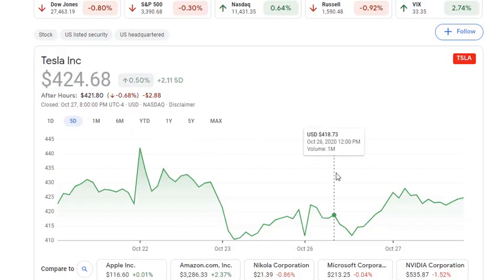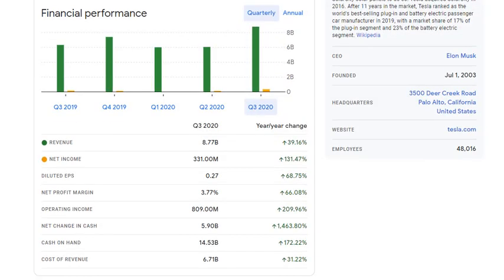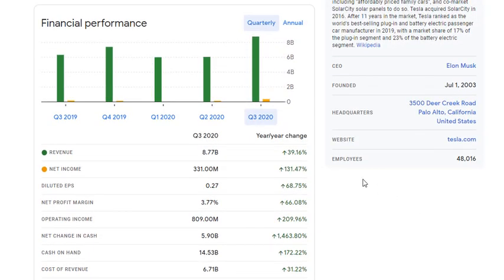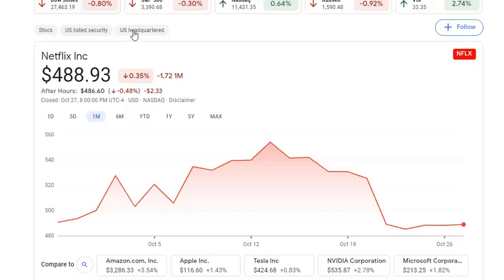Let's look at Tesla. Tesla had a great earnings report earlier this week. Stock price barely moved, barely moved at all. How do they do? Let's scroll down here. Their revenue is up 40% year over year. Net income is up 131%. They are doing excellent.